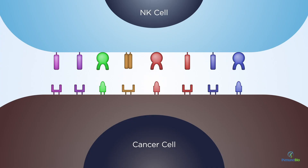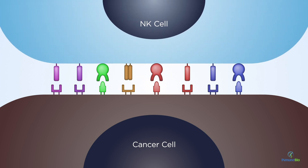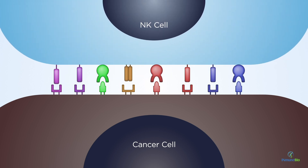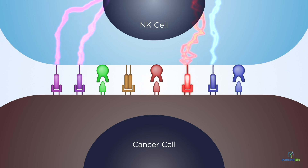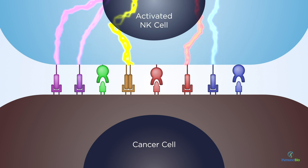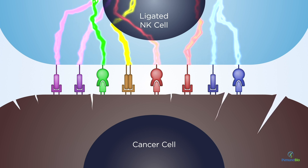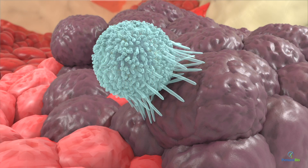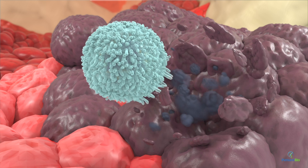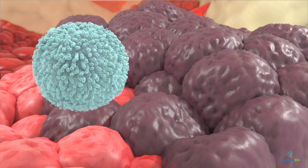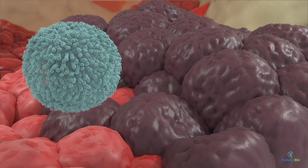While resting NK cells circulate in the blood, their activation is controlled by a multi-step signaling process requiring multiple ligations of molecules expressed on their surface. This cascade of signals moves the cell from rest to the point where it can kill tumor cells. Most tumor cells provide enough of these signals to drive resting NK cells through to release of lytic granules and cytokines.